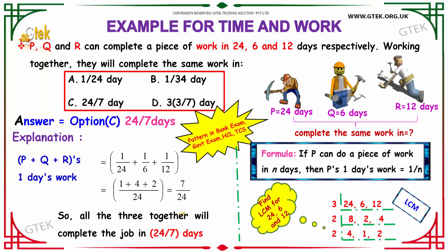So, all three together will complete the job in 24 by 7 days. As we know that, if P's one day work is 1 by n, then P can do the piece of work in n days. So, one day work is 7 by 24. So, in 24 by 7 days, they can complete the work. So, our answer is option C, 24 by 7.